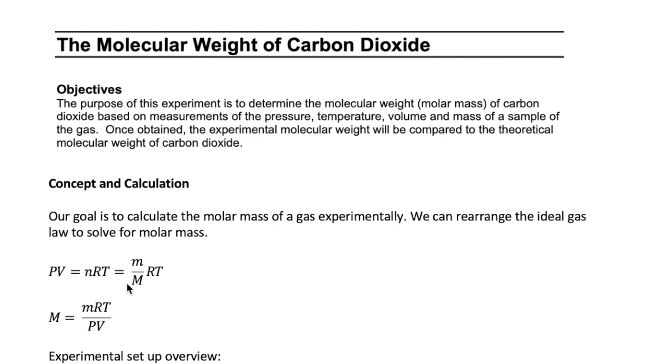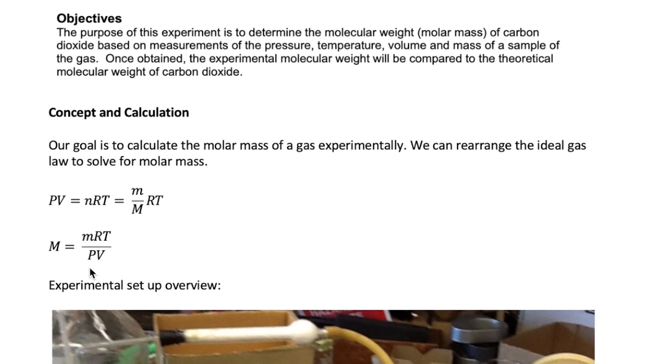Let's start with the ideal gas equation, PV equals nRT. We can express the number of moles here as the ratio of mass to molar mass. If we isolate the molar mass to one side, it will be equal to mRT over PV. This means that we will need to measure four experimental variables: mass, temperature, pressure, and volume of the gas, to be able to calculate its molar mass.